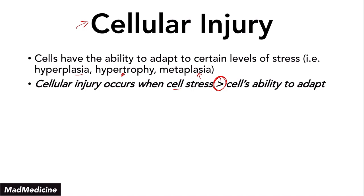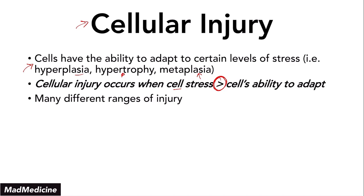The cell is not able to function properly even with its adaptive mechanisms like hyperplasia, hypertrophy, and even metaplasia. There are going to be many different ranges of injury that can occur, from very slight injury to very large wide-scale injury. That's also going to be dependent on the type of cell, the severity of the stress, and the type of stress.